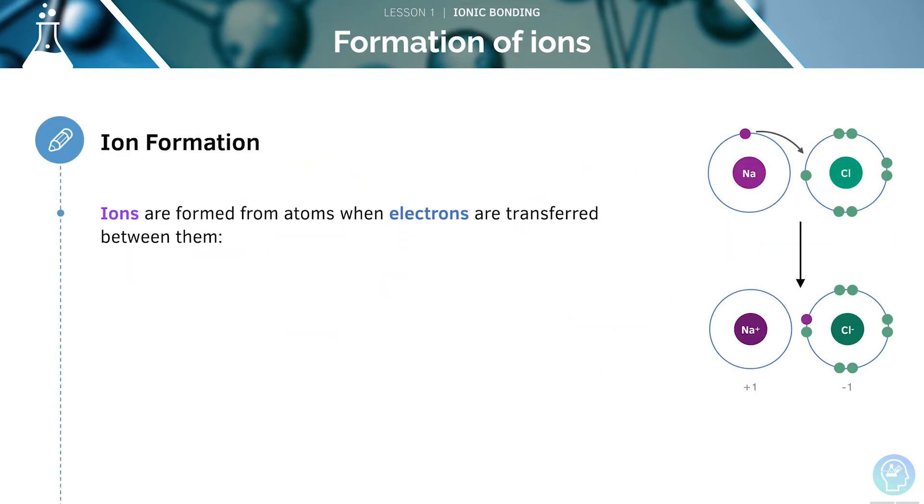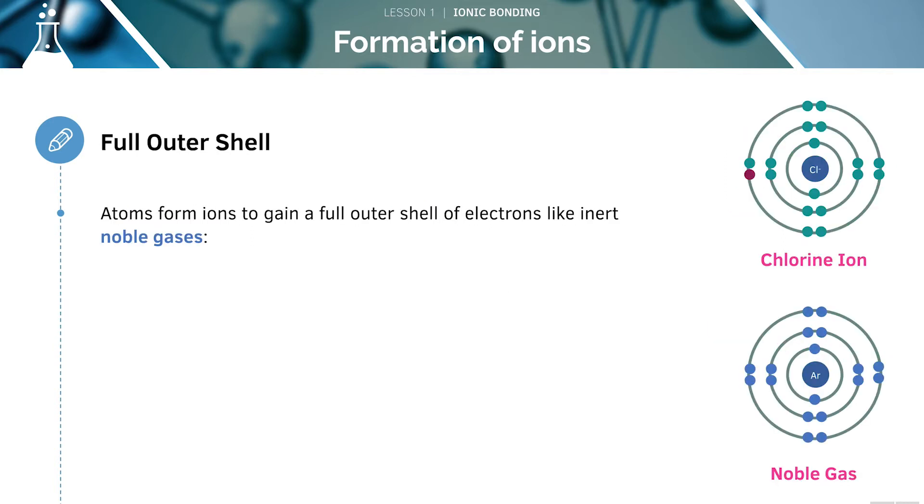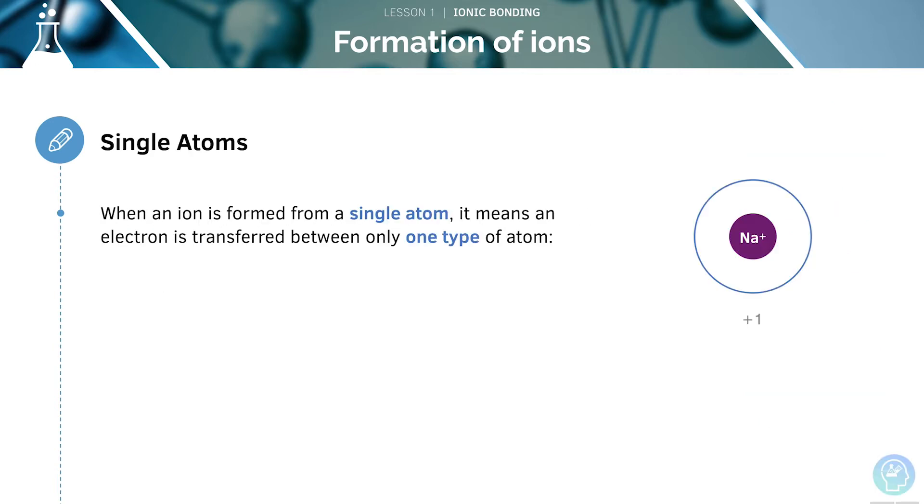We can form ions through the transfer of electrons. A negative ion is formed if an atom gains an electron, and a positive ion is formed if an atom loses an electron. Atoms want to gain a full outer shell of electrons because this makes the atom stable and unreactive. Noble gases are inert. A lot of ions are formed from single atoms. This means an electron is transferred between only one type of atom. For example, Na plus is an ion formed from a single Na atom. It is formed when a sodium atom loses an electron.